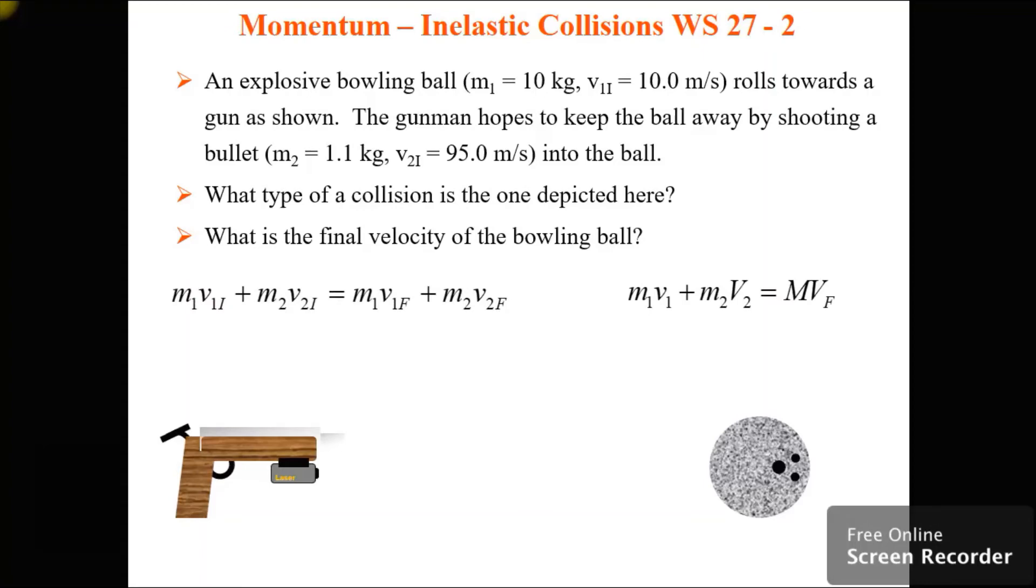Start with the equation on the right, because it's an inelastic collision. So the velocity final of the bullet plus the bowling ball is just one velocity.